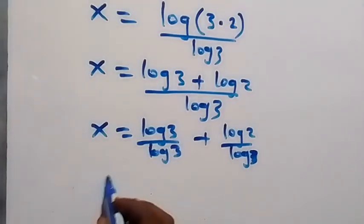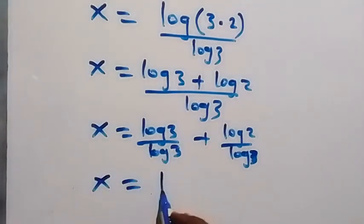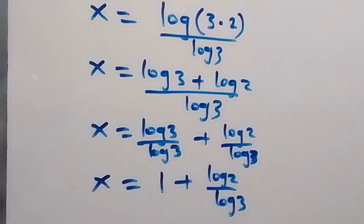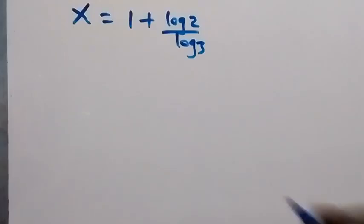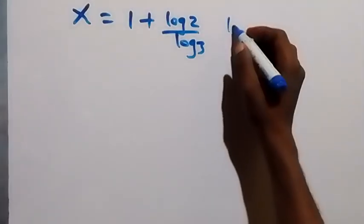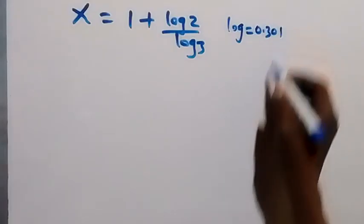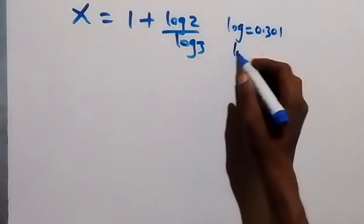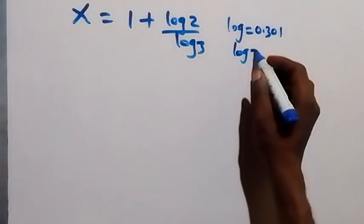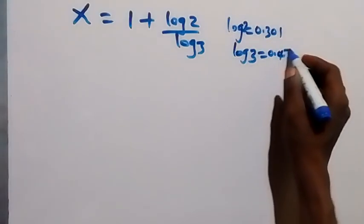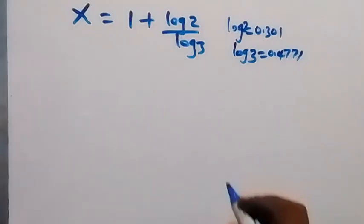From here, log 3 cancels out, that's 1, then plus log 2 over log 3. Then we have log 2 to be 0.301, and we have log 3 to be 0.4771.